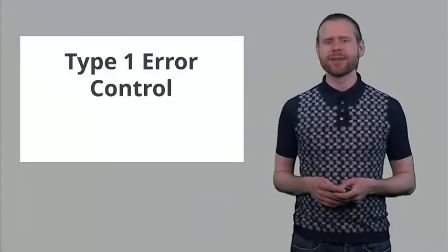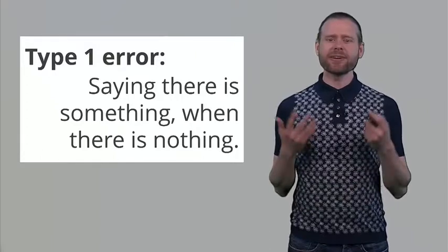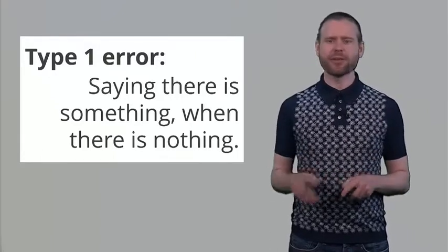In this lecture we will revisit Type 1 errors and take a closer look at one problematic aspect of Type 1 error control. In the scientific literature, people are sometimes inflating their error rates by certain practices that lead them to conclude there is an effect when there is actually no effect, at a much higher percentage than the alpha level they have decided upon. It is important not to make this mistake yourself. The Type 1 error is the situation where you say there is something when there is actually nothing going on.